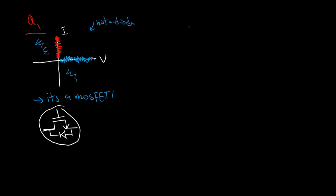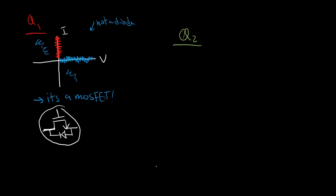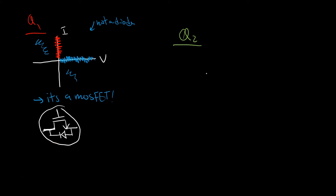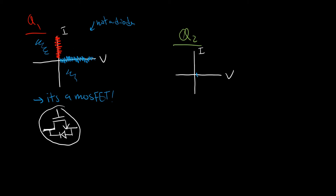Now let's look at Q2. What were the requirements for Q2? It has to block a positive voltage, and it has to conduct a negative current. So let's draw out the IV curve: it has to block a positive voltage and conduct a negative current — the current is always negative.